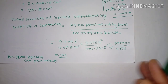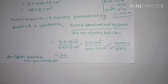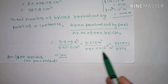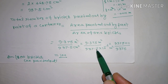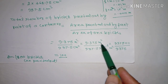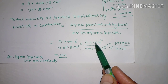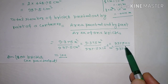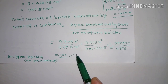1 cm is equal to 1 by 100 meter, or 10 to the power minus 2 meter. So 1 cm square equals 10 to the power minus 4 meter square, i.e., 0.0001 meter square. After converting and multiplying by 10 to the power 5, we get 100 bricks as the final answer.